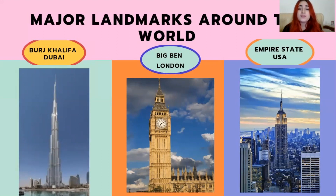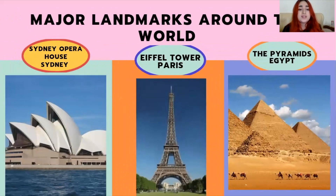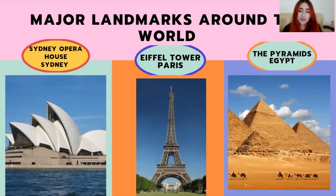The Big Ben is located in the city of London in the UK. And we also have the Empire State Building, located in the USA. Next, we have the Sydney Opera House, located in the city of Sydney in Australia — it is truly beautiful. And we have the Eiffel Tower, located in Paris, France. Lastly, we have the pyramids, located in Egypt. Aren't these such beautiful landmarks?